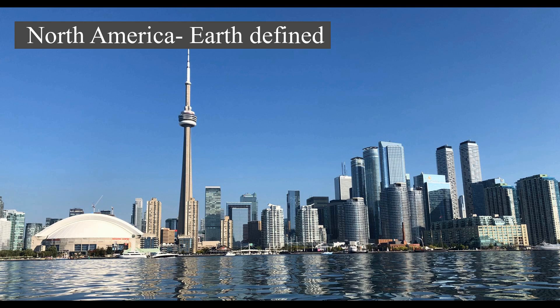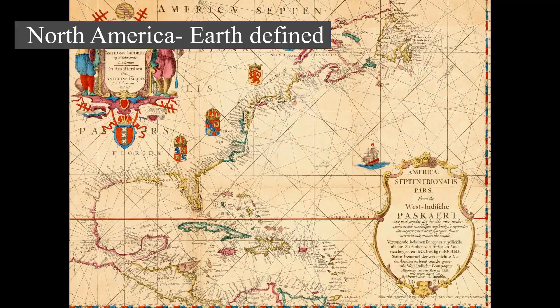In 2013, its population was estimated at nearly 579 million people in 23 independent states, or about 7.5 percent of the world's population. In human geography and in the English-speaking world outside the United States, particularly in Canada, North America and North American can refer to just Canada and the United States together.